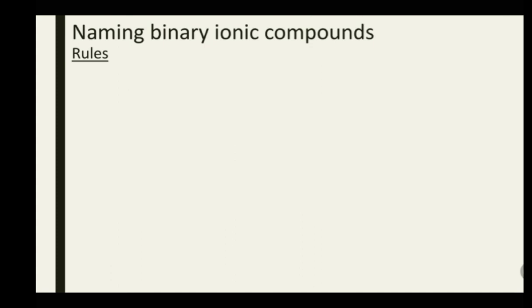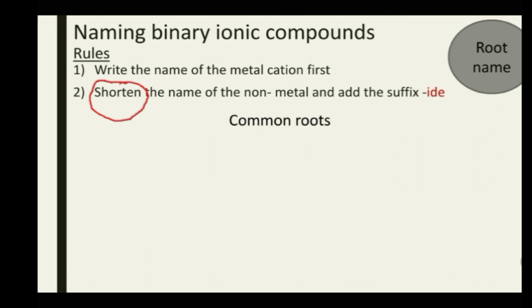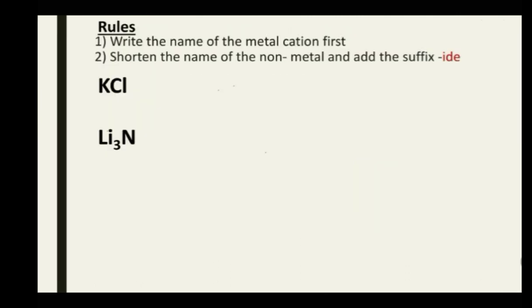Now let's consider naming binary ionic compounds. We also have rules here. The first rule is to write the name of the metal cation first. The second rule is to shorten the name of the non-metal and add the suffix '-ide' to it — this shortened form is called the root name of the non-metal. Common non-metal root names include: nitrogen → nitr, phosphorus → phosph, oxygen → ox, sulfur → sulf, fluorine → fluor, chlorine → chlor, bromine → brom, and iodine → iod.